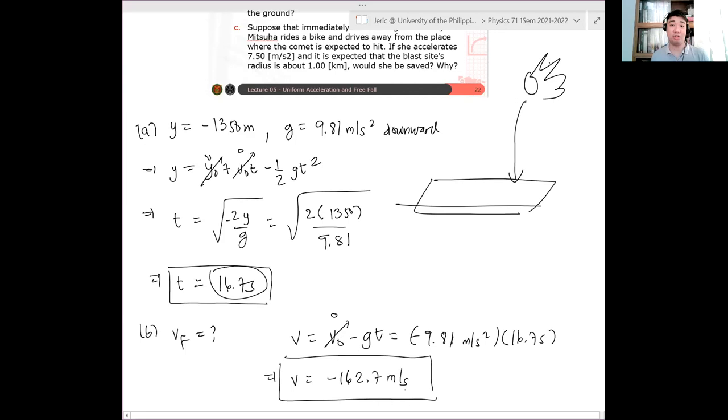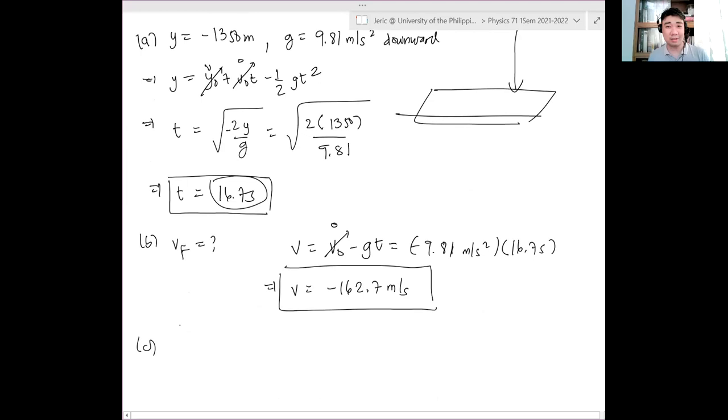So this is the final velocity of the comet upon reaching the ground. And then, the last part of this problem, will Mitsuha be saved? She rode a bike and accelerated with some acceleration, 7.5 meters per second squared. The question is, is her acceleration enough to escape the blast site? So how do you solve that? What equation do you need to use? So this is the blast site. The comet is going here. And Mitsuha is, let's say, at the center. She's going outward now.